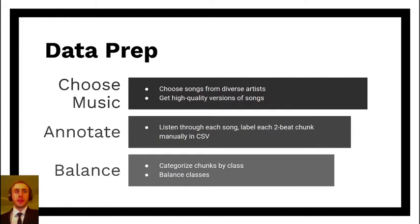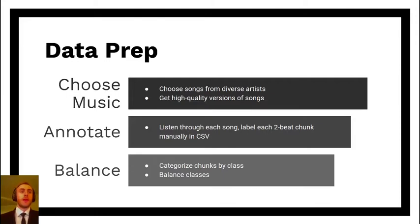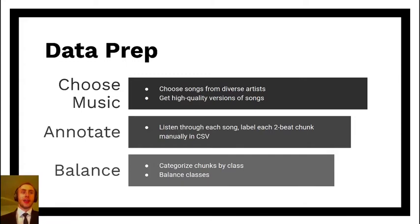I chose to start by using two broad categories of gears instead of the full nine classes. But one issue that came up was that different artists used very different proportions of gears in their songs. These ratios ranged from 10-to-1 to nearly 1-to-1 of the two classes. So in order to have balanced classes, I ended up having to leave about 40% of my labeled data unused.